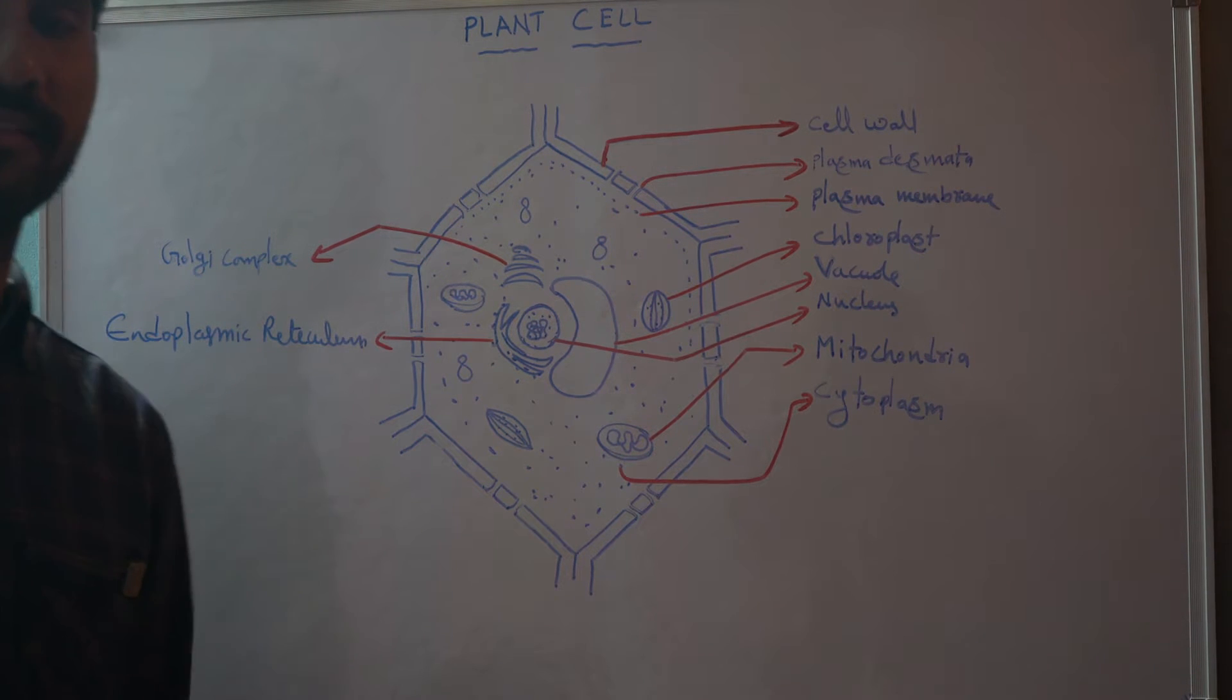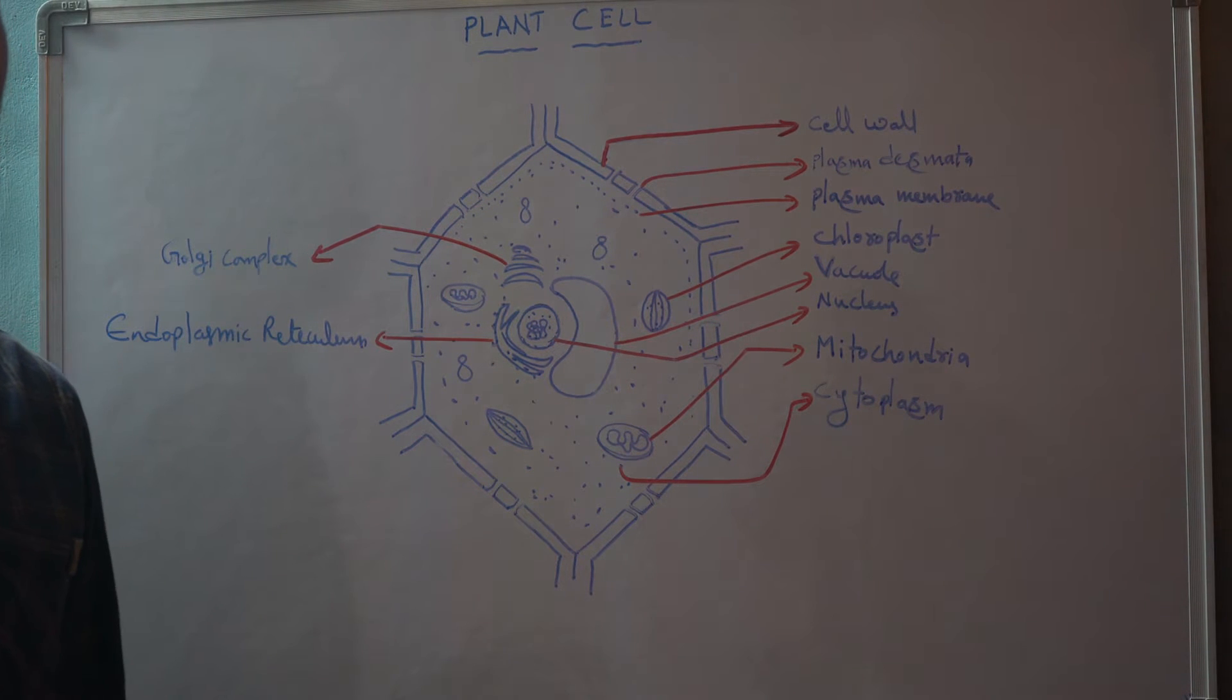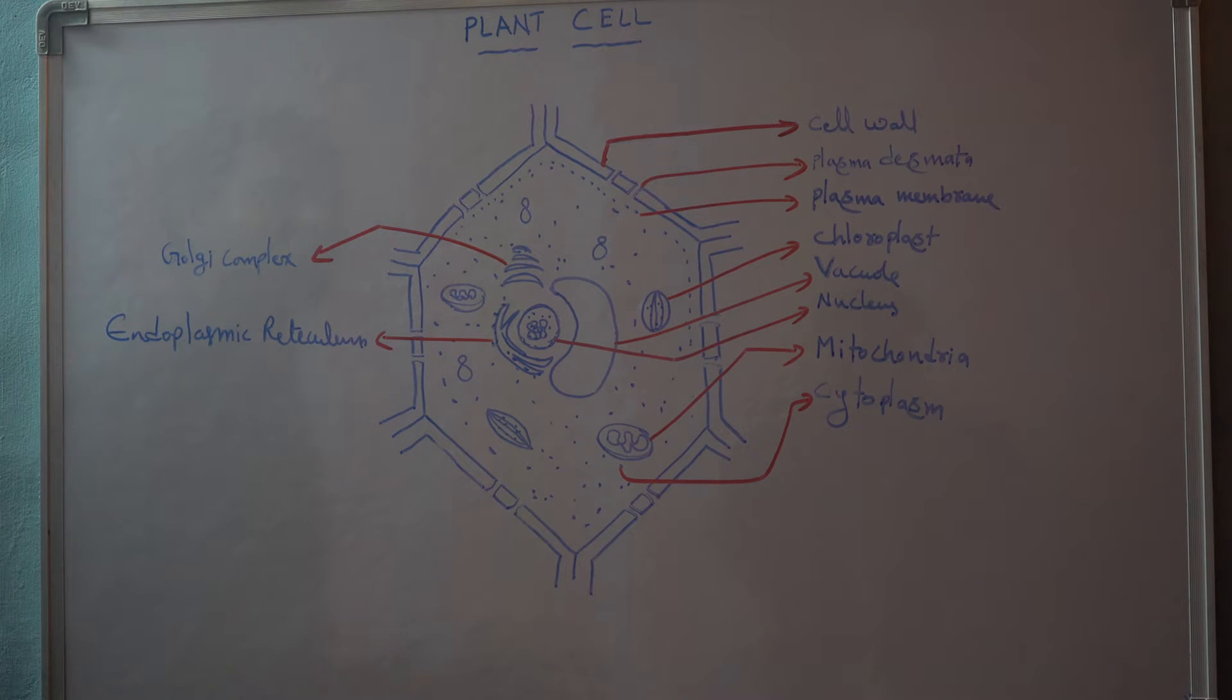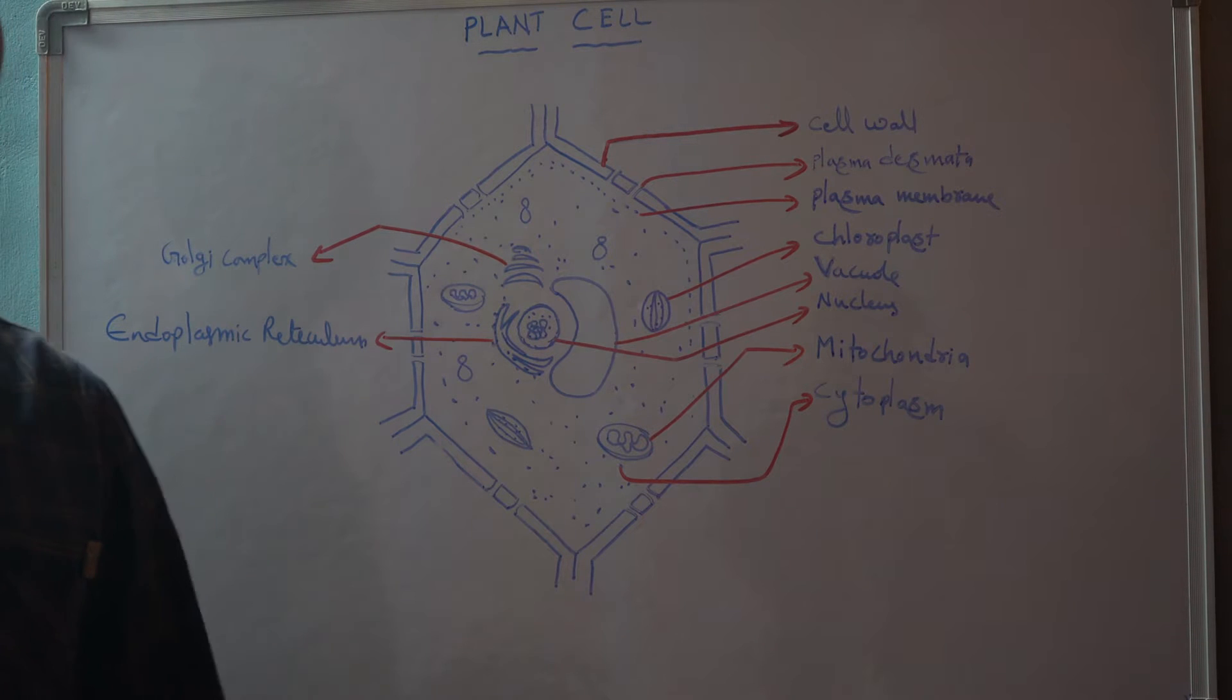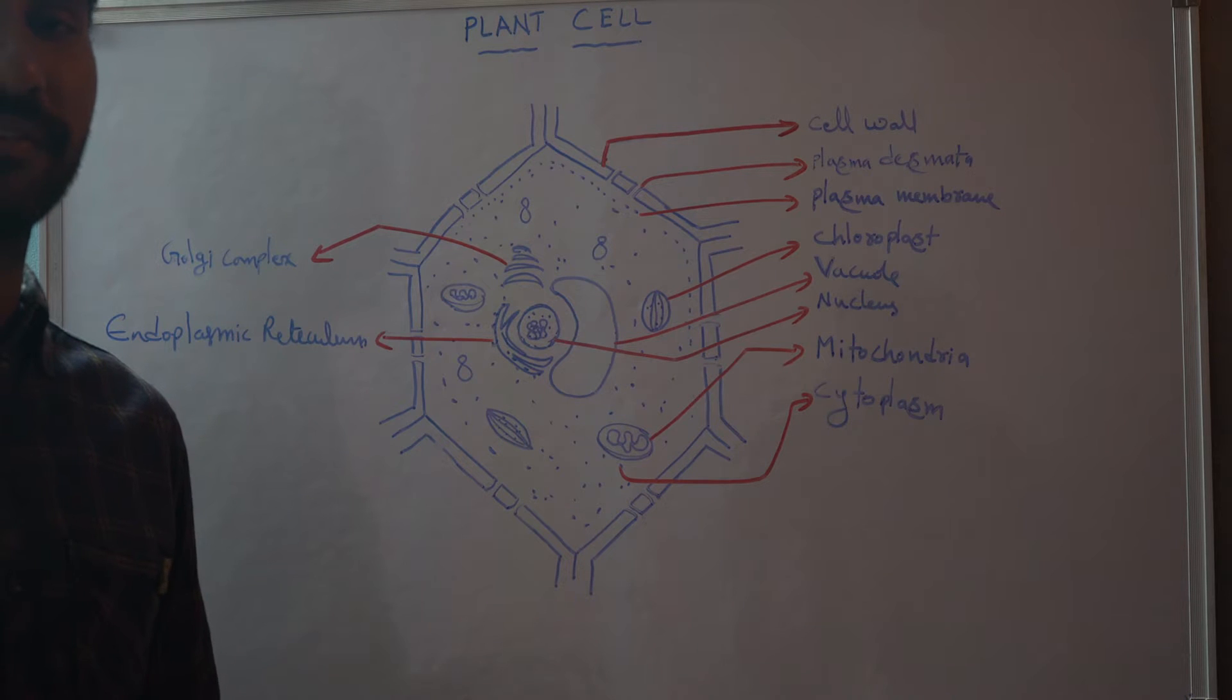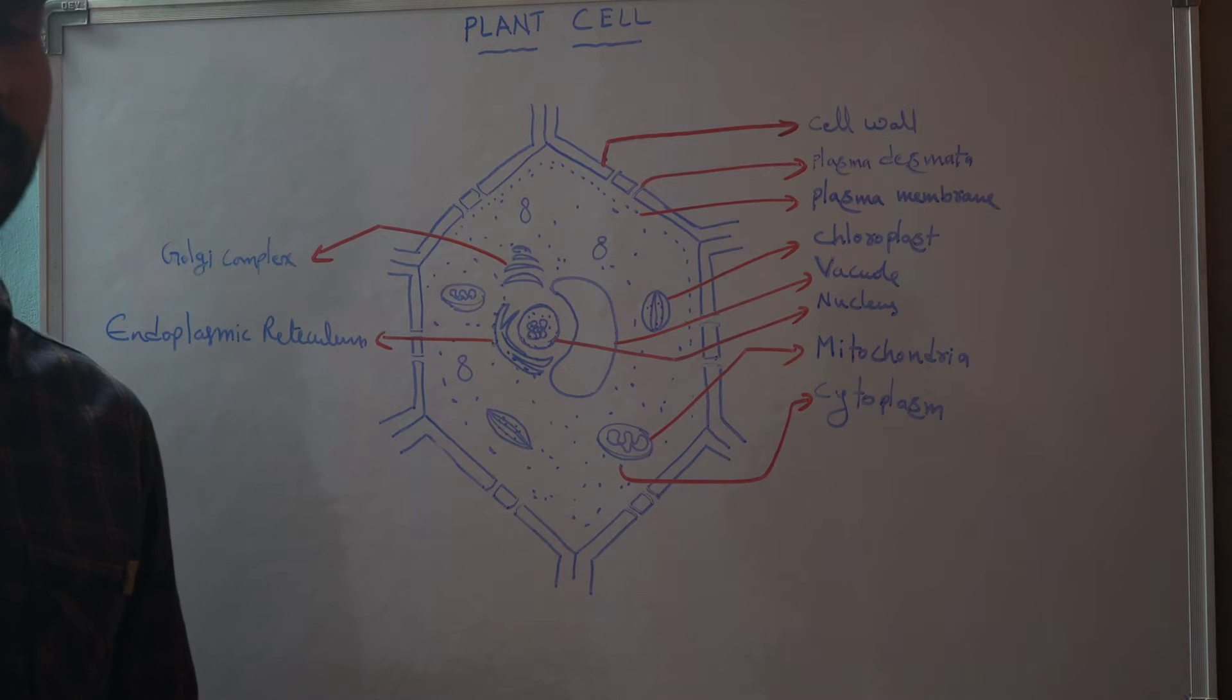Hi, good morning. This is Narendra. Let us discuss plant cells. Usually plants are made of different types of plant cells. There are two types of tissues present in plants: simple and complex tissues. Before going into that, let us discuss the plant cell. What exactly is a plant cell?